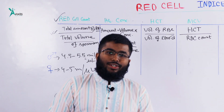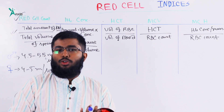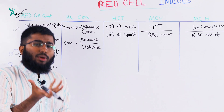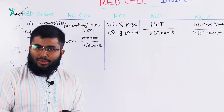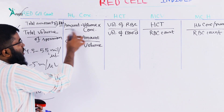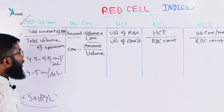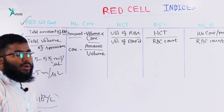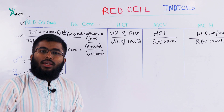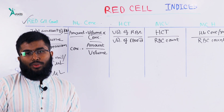This is hemoglobin concentration. What is hemoglobin? The amount is equal to volume into concentration. So concentration is equal to amount divided by volume.